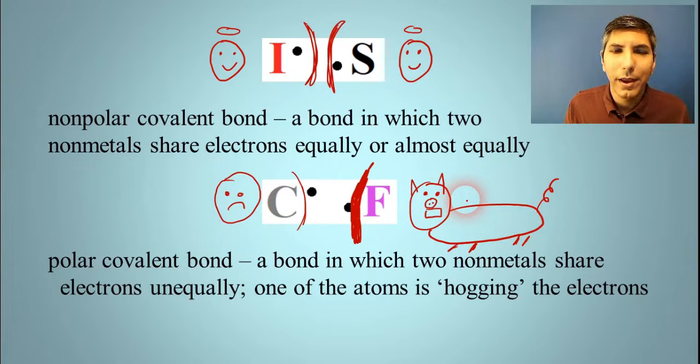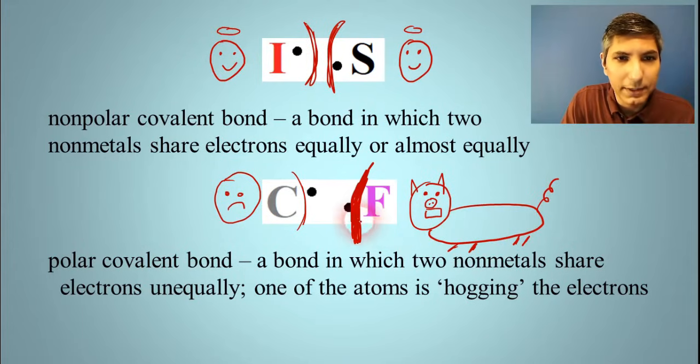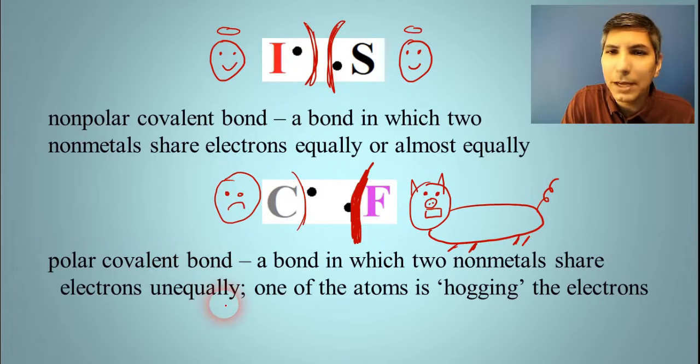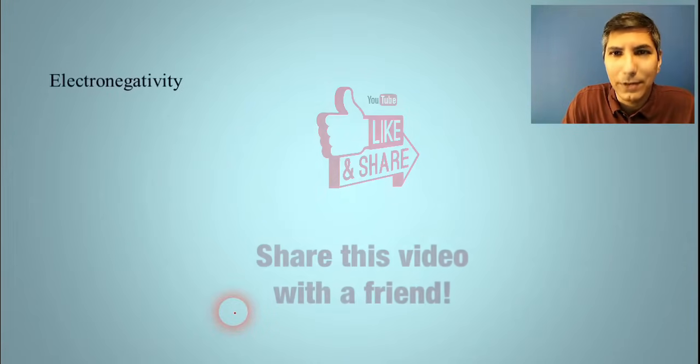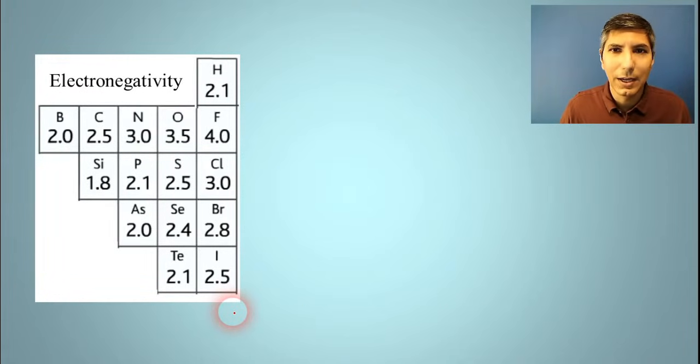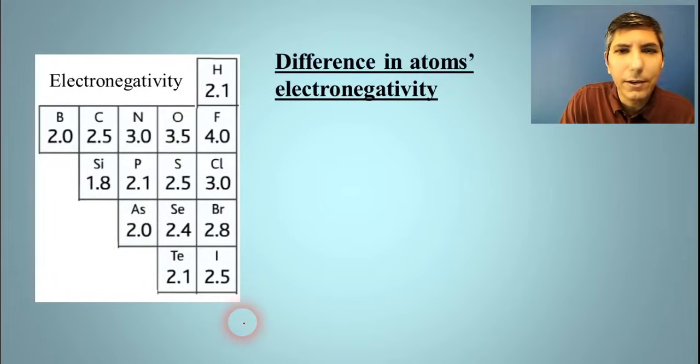Now, the question is, how do I know? How do I know that fluorine is the electron hog and it's not carbon? Or how do I know that in this pair up here, iodine and sulfur are sharing those electrons fairly equally? Well, it comes down to something that we learned at the end of unit one. And that's called the electronegativity. Now, every atom on the periodic table has an electronegativity. Since we're talking about covalent bonds, I'm just showing you the examples of the electronegativities of the nonmetals here, or most of the nonmetals. But if you look at the difference in the electronegativity of the atoms that are in the structure, you can see if it's a polar or a nonpolar bond.